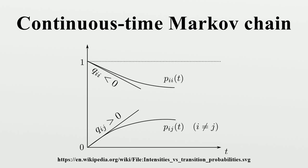Definitions. A continuous time Markov chain is defined by a finite or countable state space S, a transition rate matrix Q with dimensions equal to that of the state space, and an initial probability distribution defined on the state space. For i≠j, the elements Q_ij are non-negative and describe the rate of process transitions from state i to state j. The elements Q_ii are chosen such that each row of the transition rate matrix sums to zero. In the infinitesimal definition, let X(T) be the random variable describing the state of the process at time T. The Q_ij can be seen as measuring how quickly the transition from i to j happens.